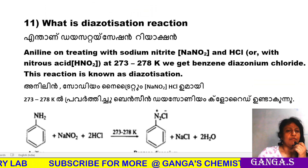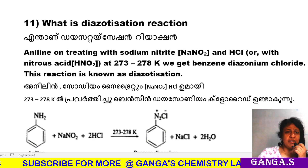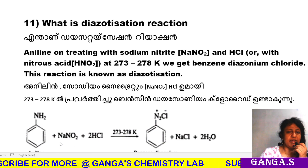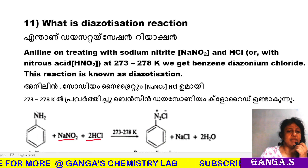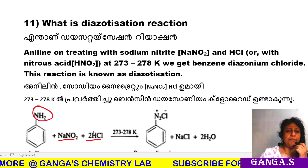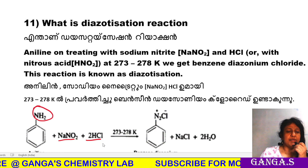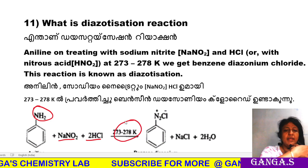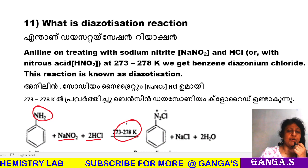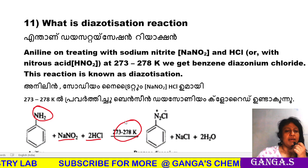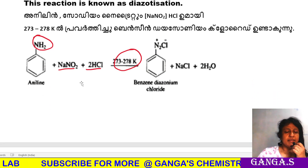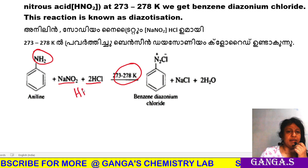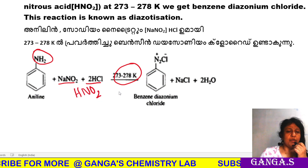What is the diazotization reaction? Aniline is treated with sodium nitrite and HCl. The temperature is maintained at 273 to 278 Kelvin, which is 0 degrees Celsius. Sodium nitrite and HCl react to form nitrous acid, which then reacts with aniline under these acidic conditions.